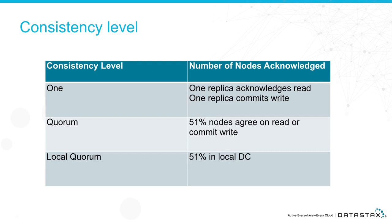If you do a read at ONE, you have a potential for stale data — right after a write, you might get your old data or no data at all. We also have local quorum, because when running in multiple data centers, quorum could potentially cross a WAN link. Local quorum means you only want quorum within your local data center. A WAN link usually generates a lot more latency — going east coast to west coast on Amazon is like 60 to 70 milliseconds. Do a local quorum and you'll be happy.